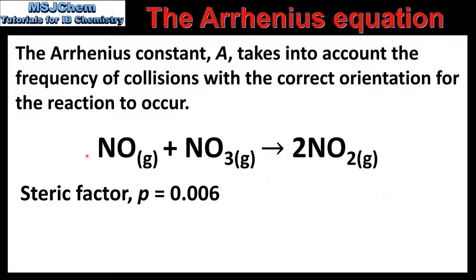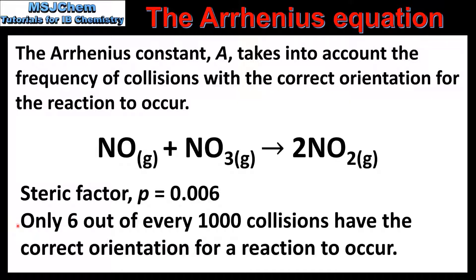Here we have an example: the reaction between nitrogen monoxide and nitrogen trioxide to form nitrogen dioxide. The steric factor for this reaction is 0.006, meaning that only 6 out of every 1000 collisions have the correct orientation for a reaction to occur.